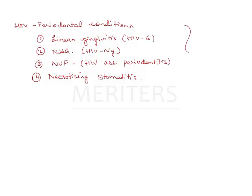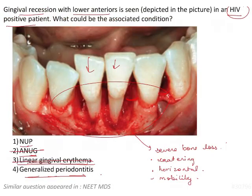These are the 4 periodontal conditions relevant with respect to HIV patients. In the given options, necrotizing ulcerative periodontitis is also given, and the clinical features of this condition are the same as what we have enlisted here.